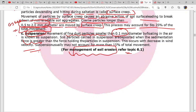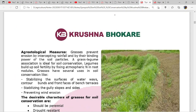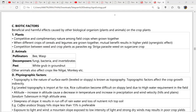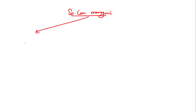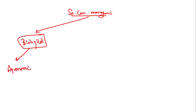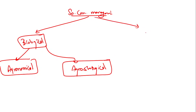For management of soil erosion, we will see the first section which is very important. Soil conservation management is done by three methods: first is biological, which includes agronomical measures and agrostological measures; another one is mechanical methods.